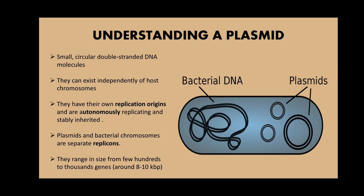Plasmids and bacterial chromosomes are separate replicons, meaning they have a specific sequence with a replication origin that is capable of being replicated independently. Plasmids have relatively fewer genes, generally less than 30, and range in size from a few hundred to around 8 to 10 kilobase pairs. Their genetic information is not essential to the host, and bacteria can usually function normally without them.